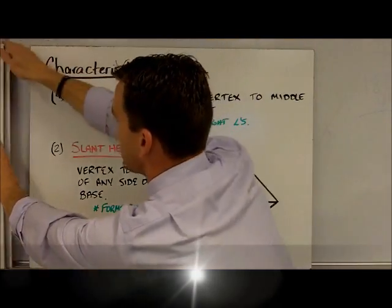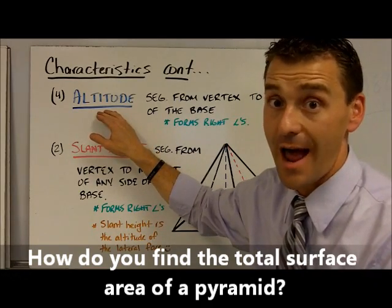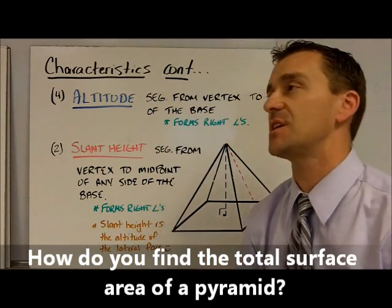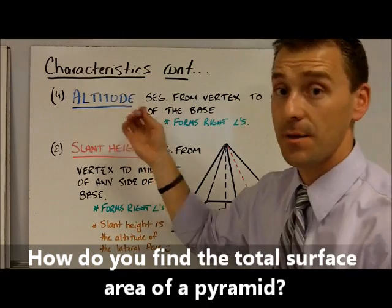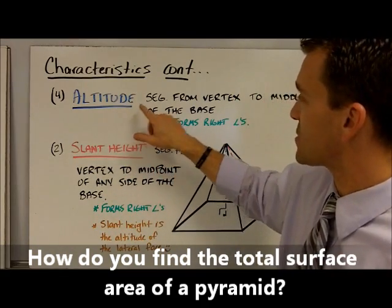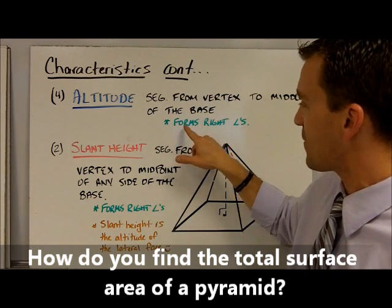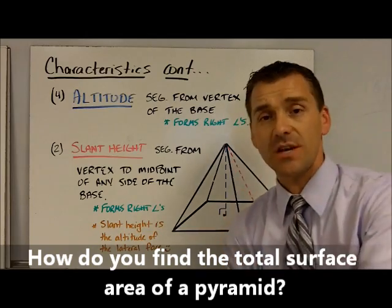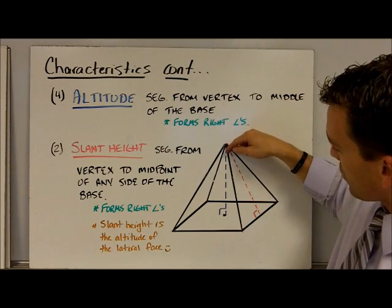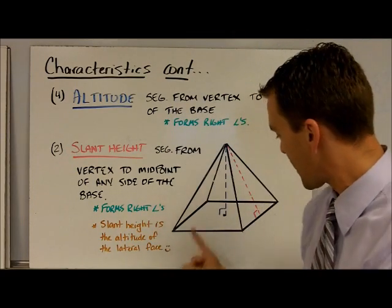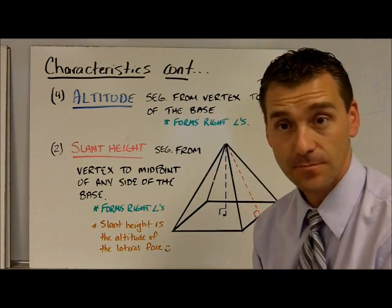A couple other characteristics about pyramids. Number four, every single pyramid has this thing called an altitude. We've seen this word a lot. We've seen it in trapezoids. We've seen it in every shape to this point. Well, we're also going to see it in pyramids. An altitude, by definition, is a segment that comes from the vertex to the middle of the base. And notice it says here, it forms right angles. So from the vertex, this blue line that I'm drawing, it goes right down through the middle of the pyramid and goes to the middle of the base. That thing right there is what we call the altitude.